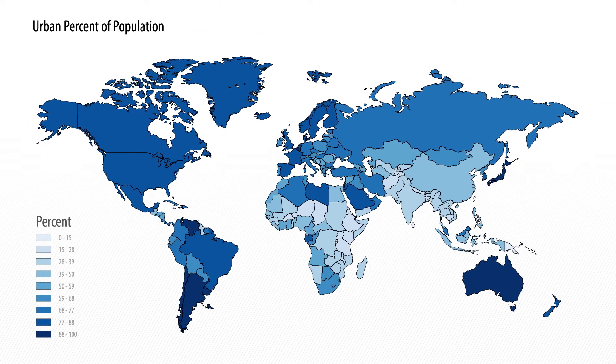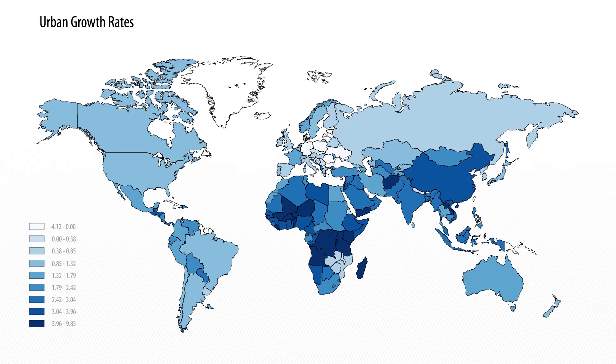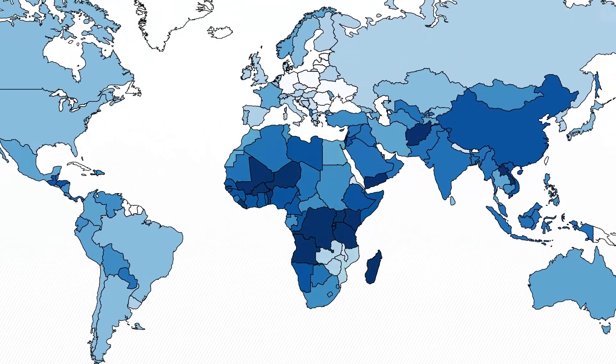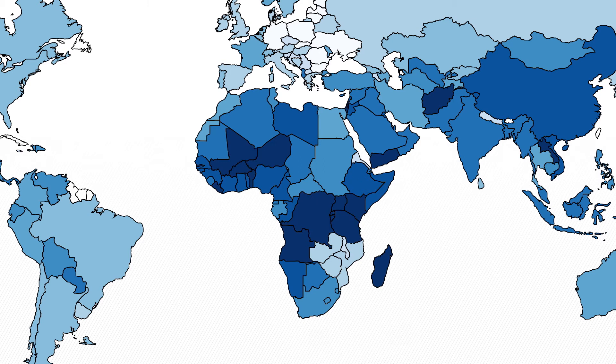Looking at the map of growth rates of urban areas — the annual proportionate increase of populations living in cities — it's actually in Africa where urbanization rates are extraordinarily high, sometimes growing at 5% per year. How long does it take for an urban area to double at 5% per year? Remember the rule of 70: divide 70 by 5%, and you get 14 years. So a city of 1 million growing at 5% per year becomes a city of 2 million in just 14 years — a pretty short period of time.